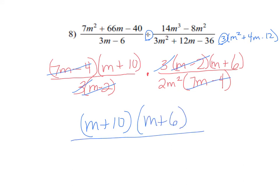This m plus 10 stays as a quantity and m plus 6 stays as a quantity. On the bottom I have my 2m squared left. And that's it. Done.